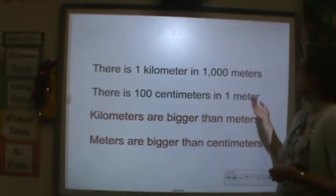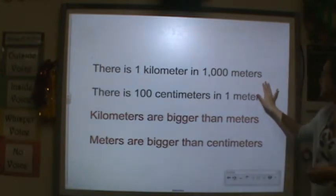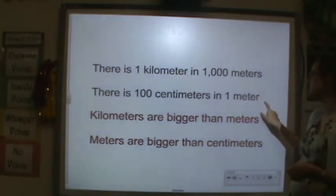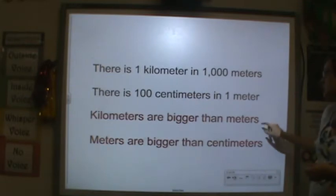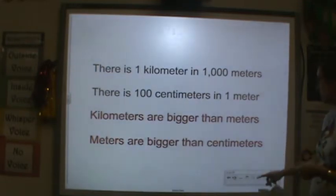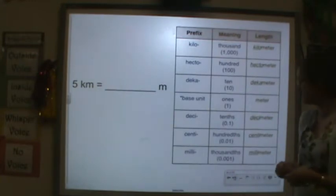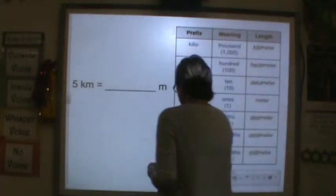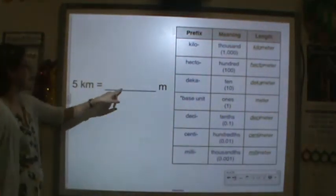There is one kilometer in a thousand meters, and there are a hundred centimeters in one meter. Kilometers are bigger than meters, and meters are bigger than centimeters.